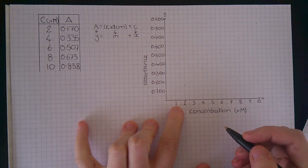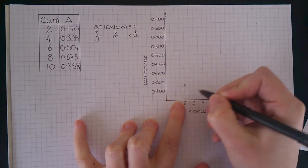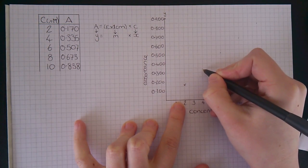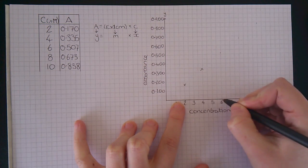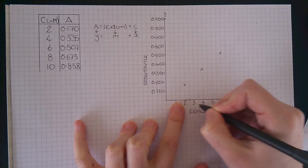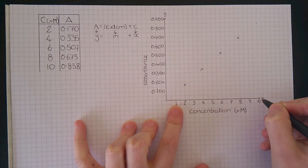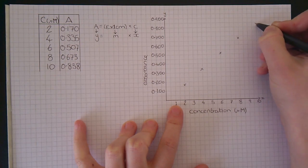Now we need to plot the points. So when x is 2, y is 0.170. When x is 4, y is 0.335. When x is 6, y is 0.507. When x is 8, y is 0.673. And when x is 10, y is 0.838.